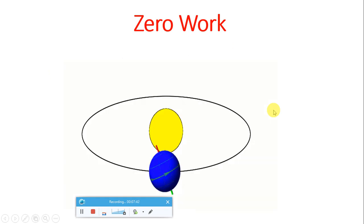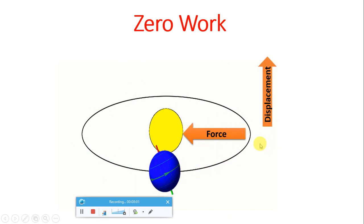Another example of zero work done is the centripetal force acting on the Earth rotating around the Sun. The gravitational force acts toward the center while Earth's displacement is in the forward direction, so the angle between force and displacement is 90 degrees, making work done zero. Today we learned about work, and the types of work: positive, negative, and zero work done, along with examples of each. Thanks for watching.